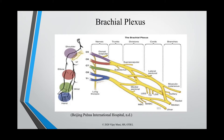Our trunks are formed at the base of our neck. The superior trunk is a combination of C5 and C6 roots. The middle trunk is a continuation of C7. And the inferior trunk is a combination of C8 and T1 roots. This is important because C5 innervates the shoulder, C6 the elbow, C7 the wrist, and C8 and T1 the hand.